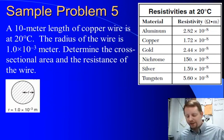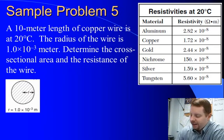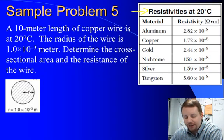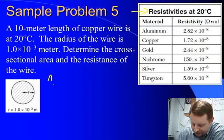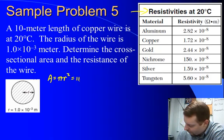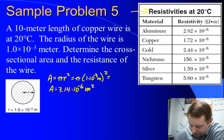Let's take a look at one last problem here. A 10 meter length of copper wire is at 20 degrees C. That means we can use our table over here. The radius of the wire is 1 times 10 to the minus 3 meter. Determine the cross-sectional area and the resistance of the wire. Alright, if we start with the area, that's going to be the area of a circle, which is pi r squared, is going to be pi times 1 times 10 to the minus 3 meters squared, or area equals 3.14 times 10 to the minus 6 square meters.